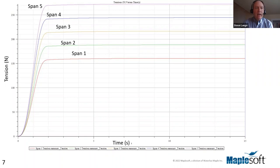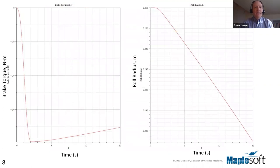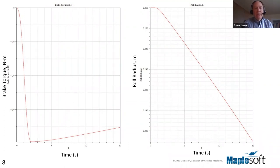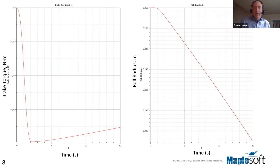Since tension is so important in web handling, this kind of dynamic simulation gives insights into what happens during transients — like line ramp-ups, ramp-downs, or splicing events. Other outputs include the breaking torque required to keep the dancer in a fixed position, and a plot of how the unwinding roll radius changes with time. You're not limited to these plots; you can add whatever sensors you need to gain insight into the process, which in simulation is much easier than in a physical system where sensor placement may be difficult or expensive.